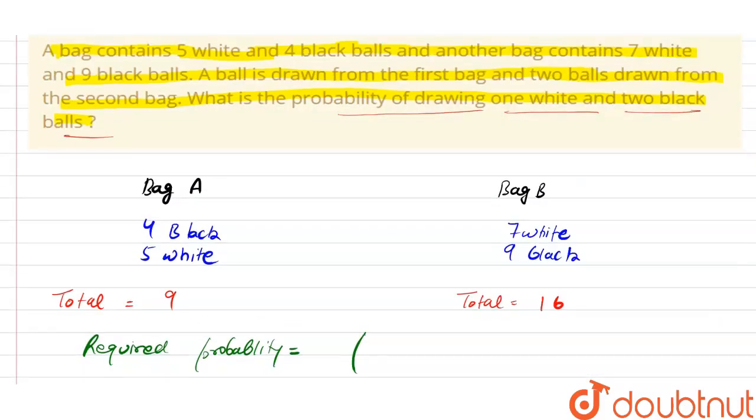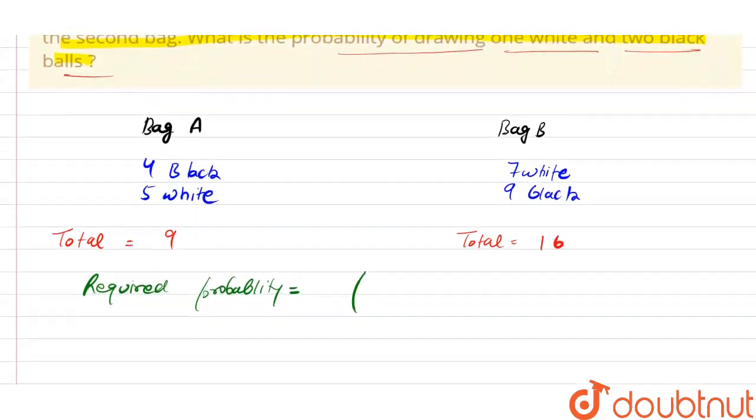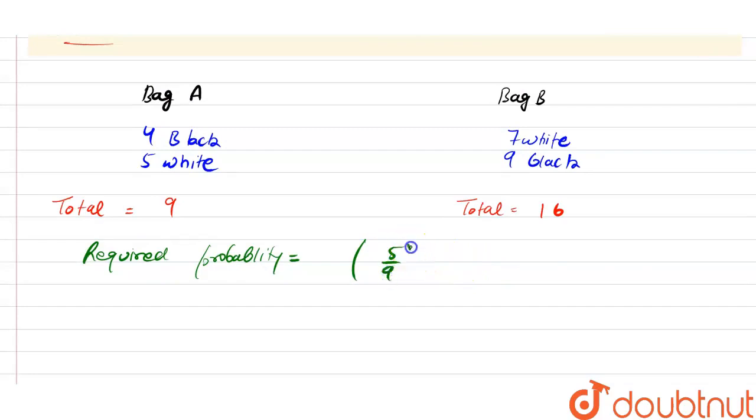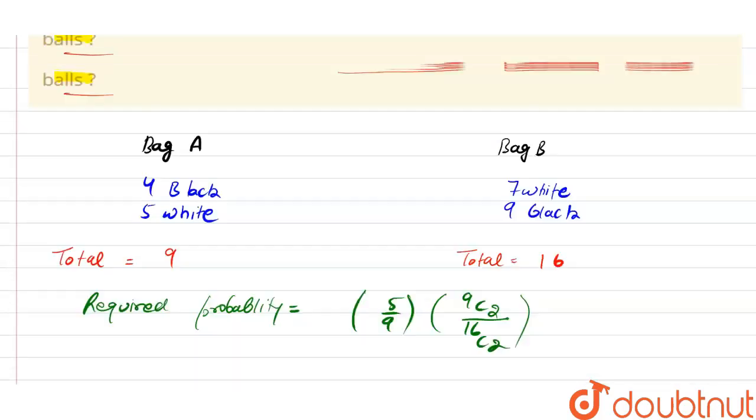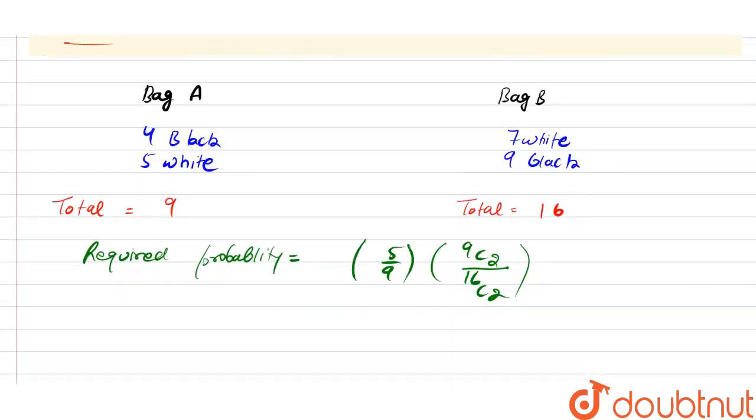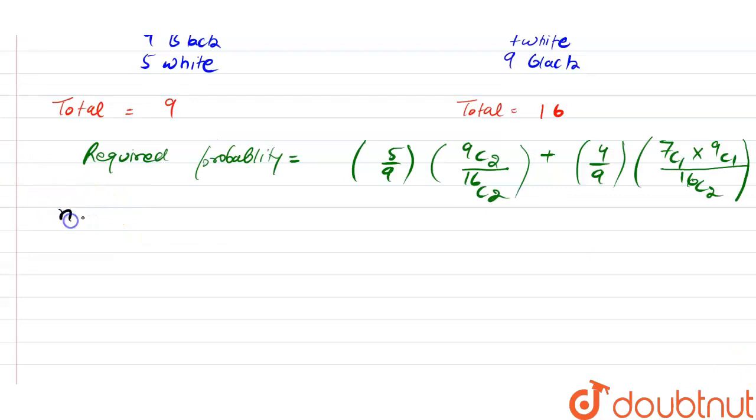If we take 1 white ball from bag A and 2 black balls from bag A also, we have 5 by 9 into 9C2 divided by 16C2, because we have to select 1 white and 2 black balls from bag A. If we select 1 white and 2 black balls from bag B, then the required probability is 4 by 9 multiplied with 7C1 into 9C1 divided by 16C2. We know that NCR equals N factorial divided by N minus R factorial into R factorial.